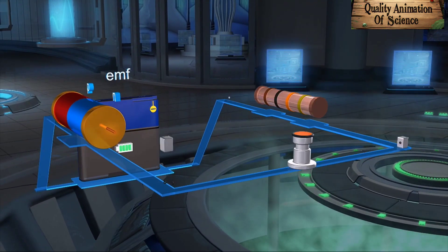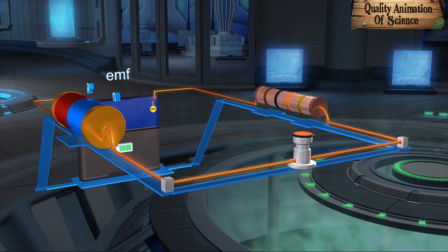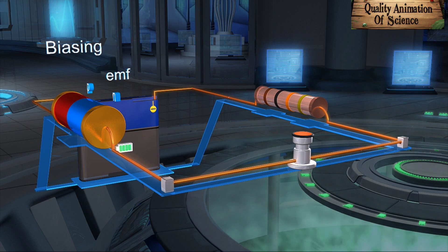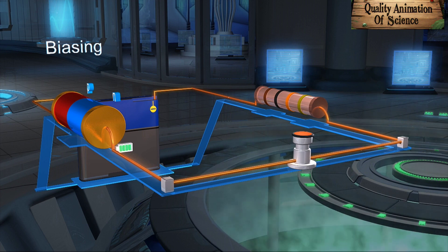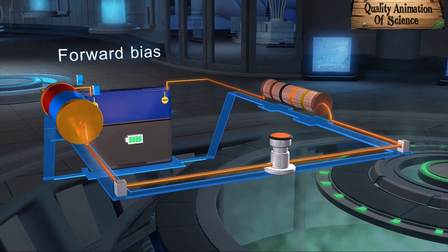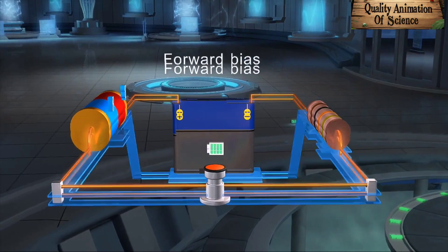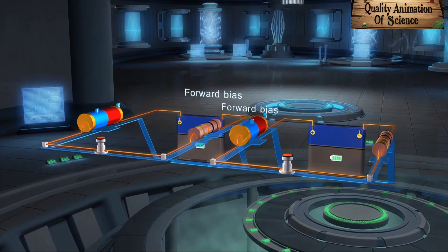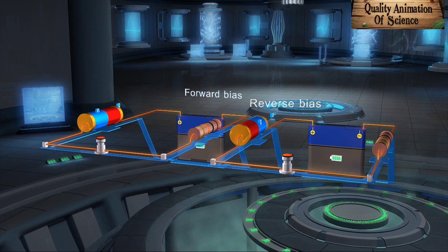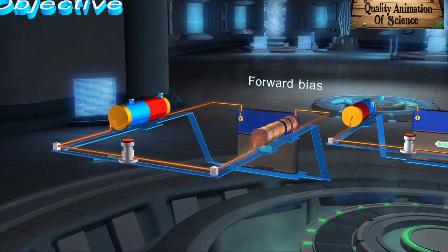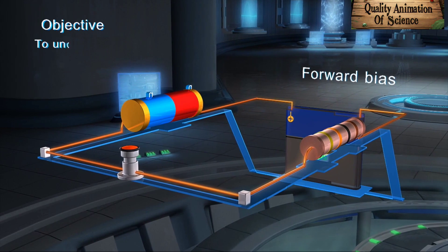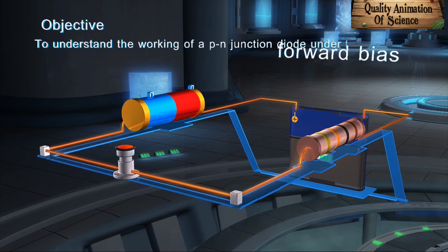When some external EMF is applied across such a P-N junction diode, it is called biasing. Depending on the direction of the applied EMF, the diode can be operated in one of two modes, namely forward bias or reverse bias. In this topic, we will primarily learn about the working of a P-N junction diode under forward bias.